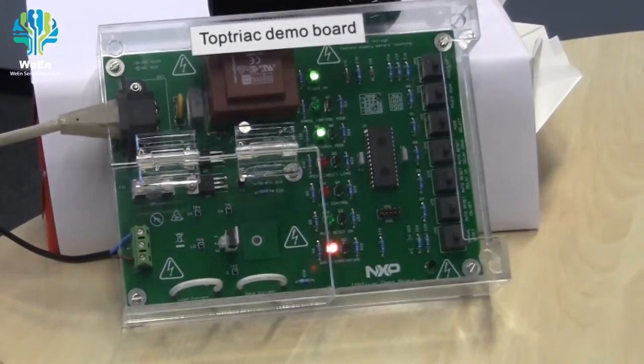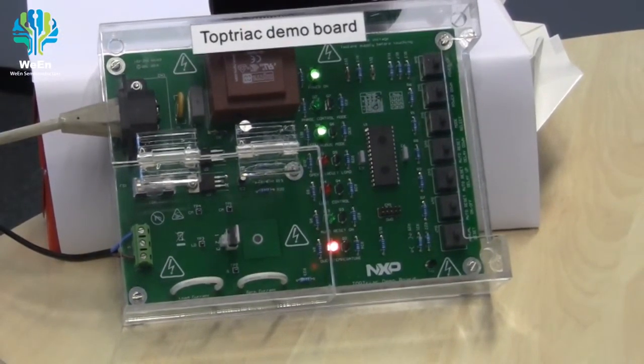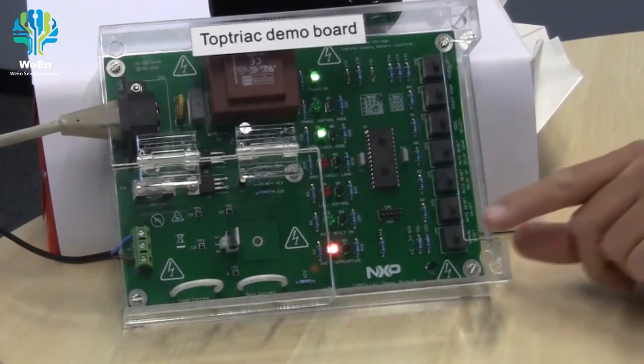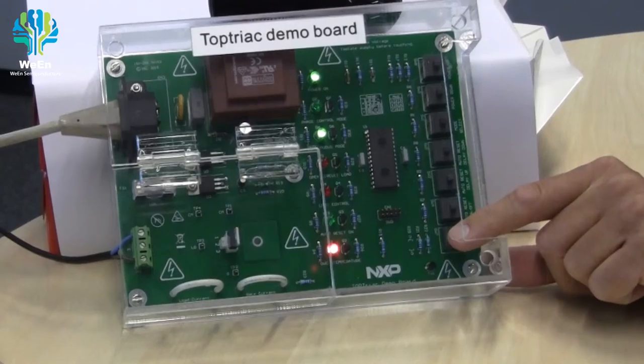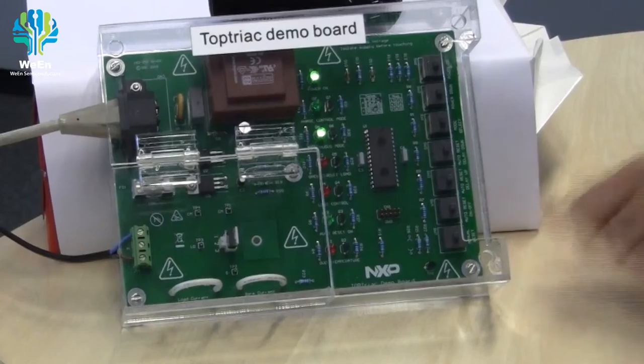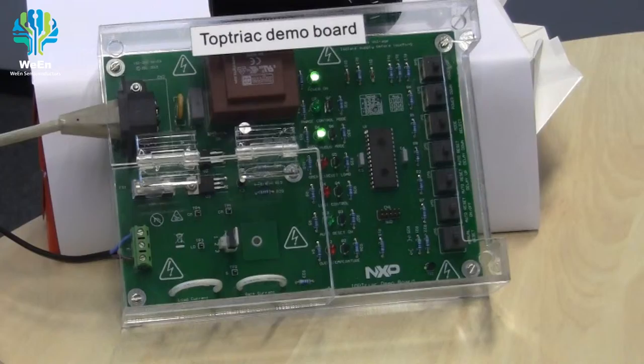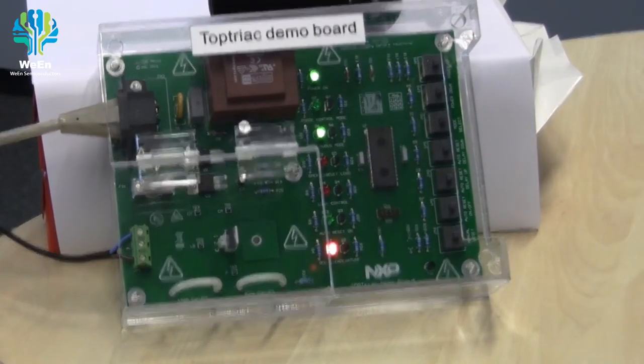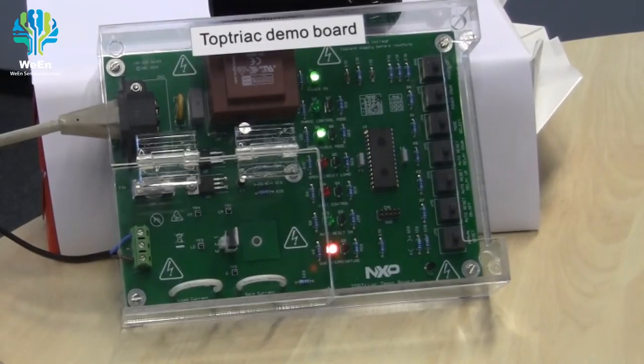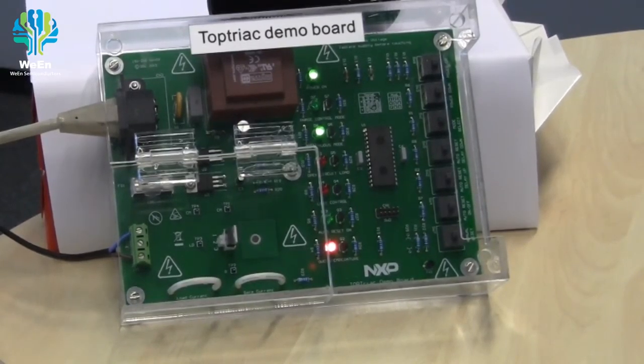We just had an over temperature event, so the TRIAC switched off itself. With this button I will remove and then reapply the DC gate current. As you hear the hair dryer switches on and the TOP TRIAC is heating up. And we wait for the TOP TRIAC to trip, which can happen any moment. Now it happened and you can see that actually the TOP TRIAC protected itself for over temperature by switching off.